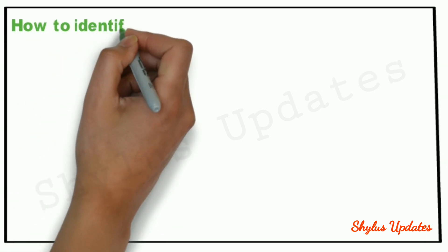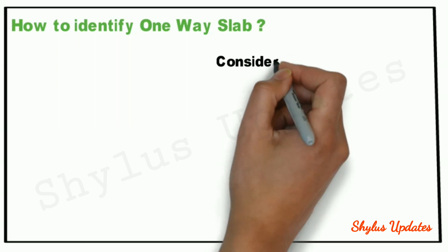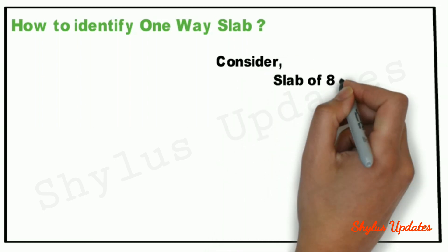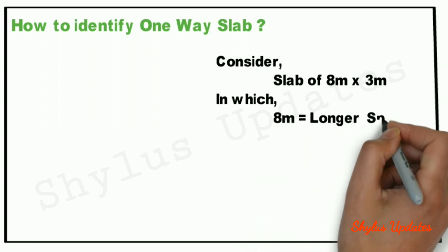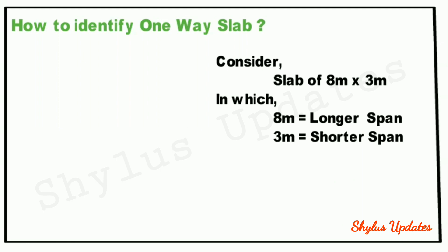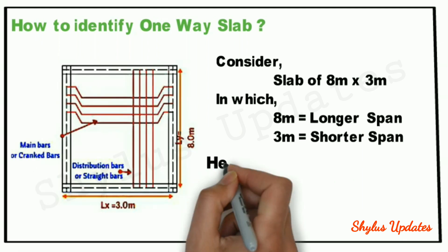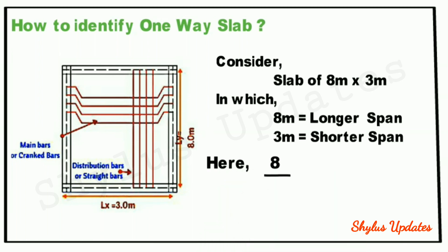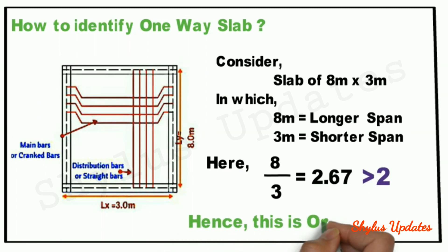How to identify a 1-way slab? Consider a slab of 8 meter by 3 meter, in which 8 meter is the longer span and 3 meter is the shorter span. You can see in this diagram, LY is 8 meter and LX is 3 meter. Here, 8 divided by 3 is equal to 2.67, which is greater than 2. Hence, we can conclude that this slab is a 1-way slab.